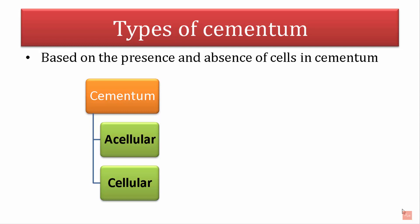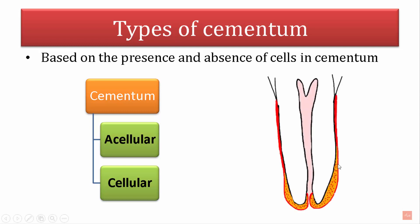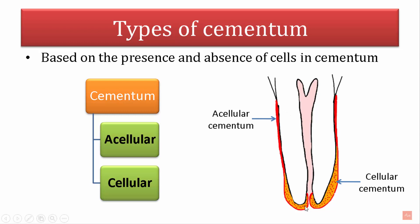Based on the presence or absence of cells, cementum is divided into two types: the acellular type and the cellular type. In this image, the acellular cementum occupies the coronal one-third or coronal half of the tooth root, whereas the cellular cementum occupies the apical one-third or apical half. The acellular cementum is much thinner in dimension compared to the cellular cementum.